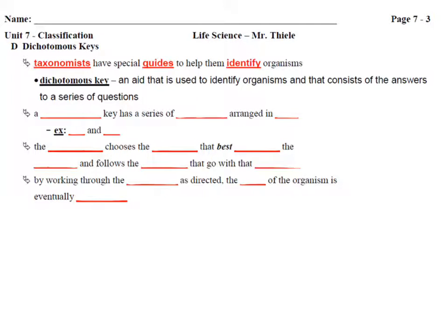A dichotomous key is an aid that is used to identify organisms, and it consists of the answers to a series of questions. Basically, it is a series of statements — usually paired statements — arranged in pairs, and they're usually given numbers such as 1A and 1B.